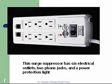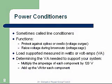Power conditioners, sometimes called line conditioners, protect against spikes, swells, and voltage surges, and can also raise voltages during brownouts. Load is measured in watts or volt-amps (VA). Voltage times amps gives you power in watts. To determine the VA needed to support your system, multiply the amps of each component by 120 volts to get the wattage, then add up the volt-amps for each component.